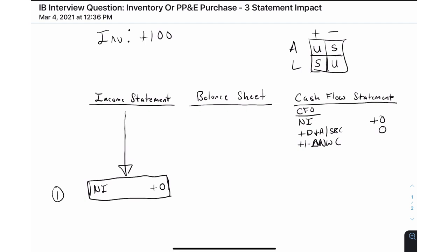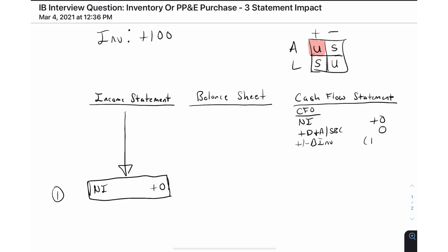Here we're going to reflect the purchase of inventory, which is a use of cash. We'll call this line item 'change in inventory' and reflect a negative $100 use of cash for the inventory we've purchased. With that captured, we draw a line across — our CFO is completed and we have a negative $100 impact from cash flows from operations from that inventory purchase.